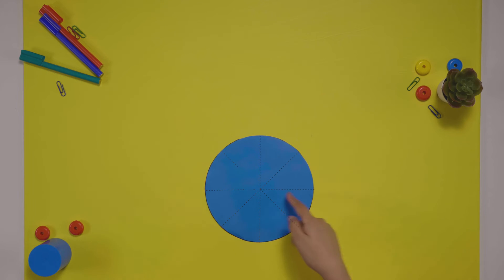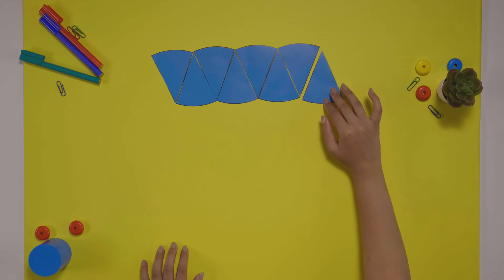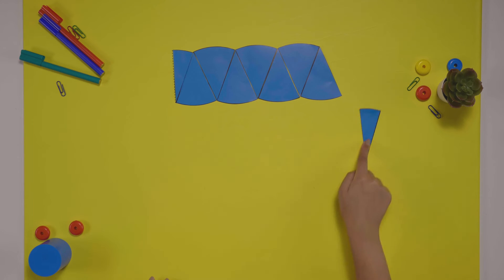but it gets simpler if we break the circle into smaller parts. Let's break this into eight parts, rearrange them as before, and cut and join one piece.